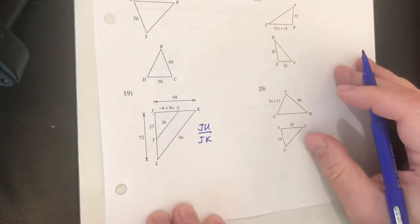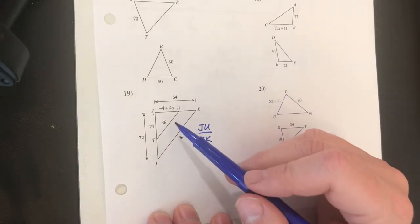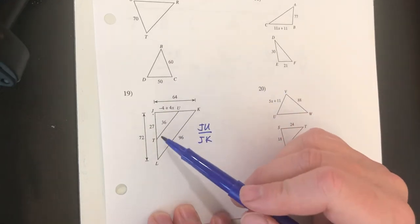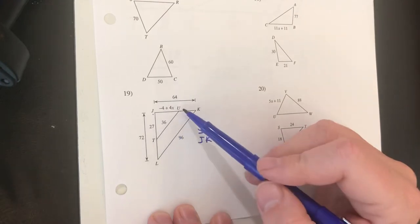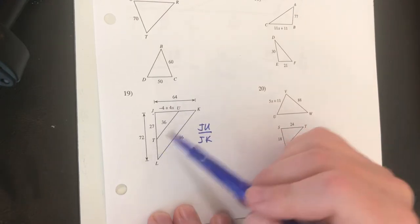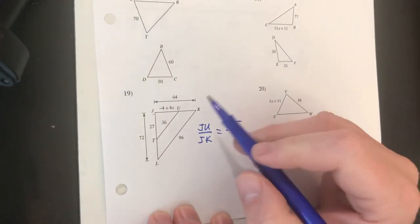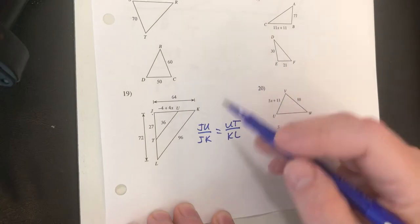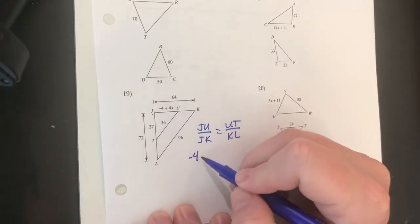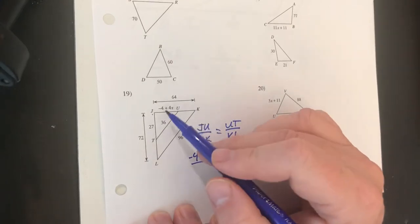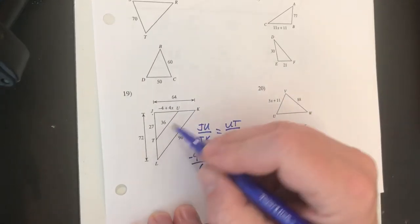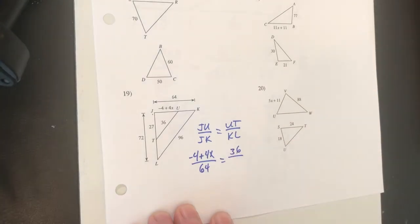So I'm going to write the ratio of JU over the corresponding side which is JK and it needs to be equal to the ratio of either of the other two sides, it doesn't matter which pair I take. It's probably easier to look at the ratio of UT to KL so I'm going to just say that's equal to the ratio of UT over KL. And so now I'm just going to substitute. JU is negative 4 plus 4x, JK I can tell is 64, UT is 36 and KL is 96.